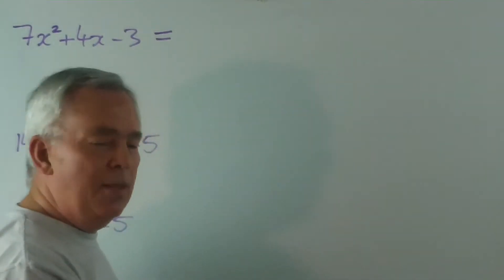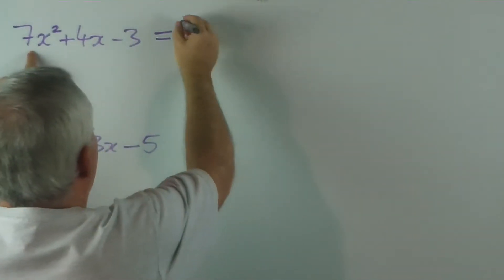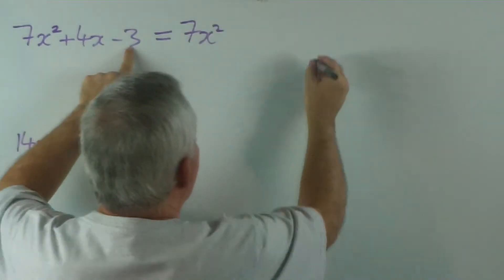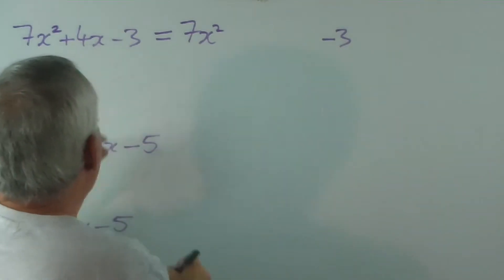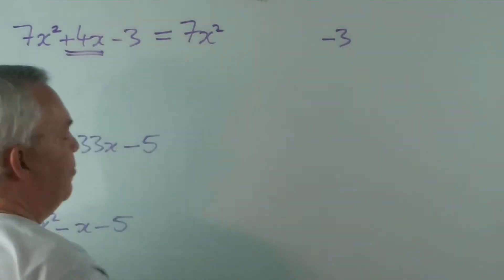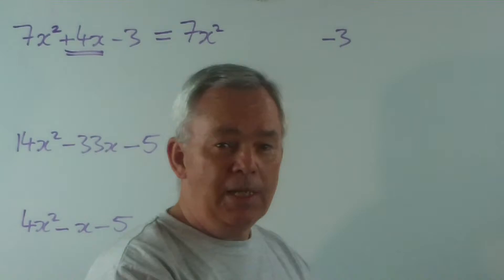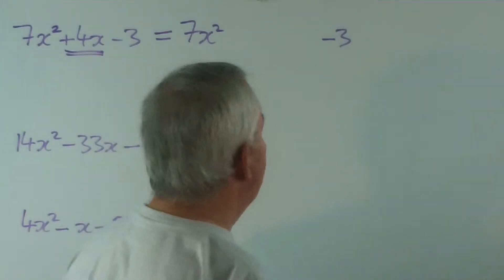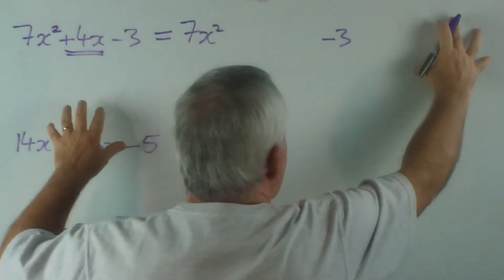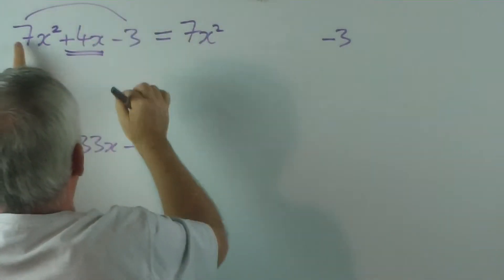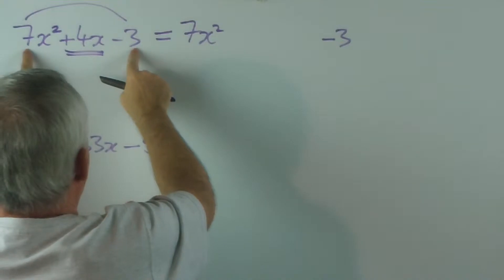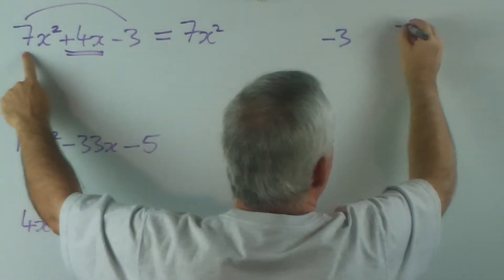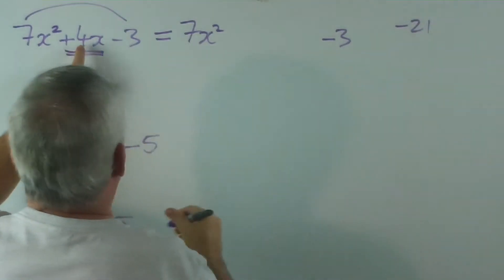The decomposition method works on this basis. It says we won't initially change the 7x squared and we won't initially change the minus 3, but we are going to split this 4x up into something more convenient. And what more convenient means with this method is this. We use our PS method on the side. We multiply the coefficient of x squared by the constant, so the two outside numbers. 7 by minus 3 is minus 21, and the plus 4 underneath.